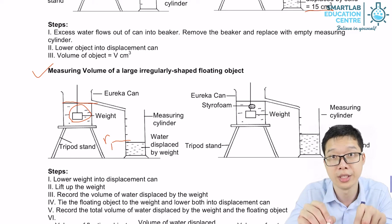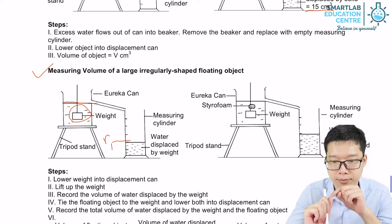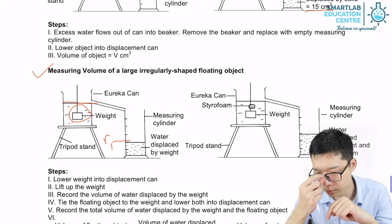The reading one is actually the volume of the weight, the block weight. That's step one. Step two.